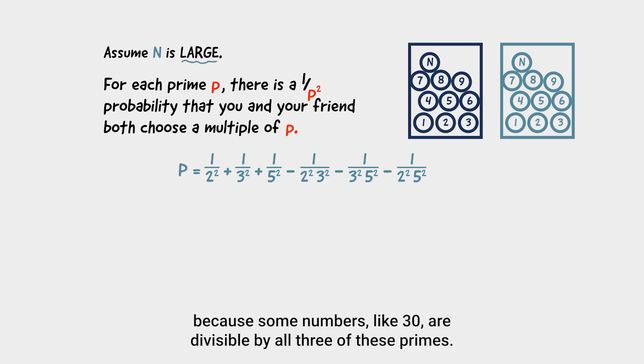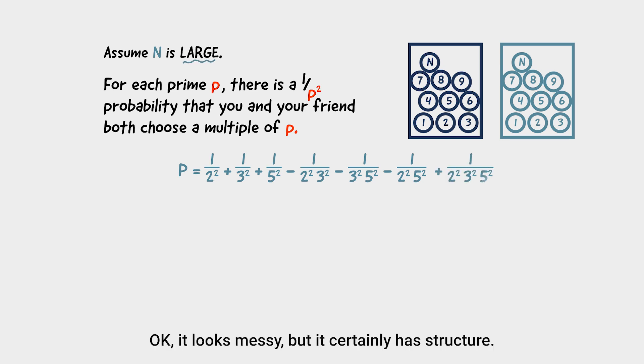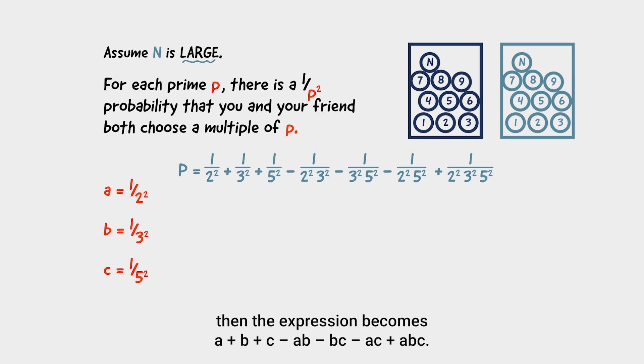because some numbers, like 30, are divisible by all 3 of these primes. And this means, for example, that we have accounted for 30 three times, and then unaccounted for it three times. So I will need to balance this too. Okay, it looks messy, but it certainly has structure. If we write a for 1 on 2 squared, b for 1 on 3 squared, and c for 1 on 5 squared, then the expression becomes a plus b plus c minus ab minus bc minus ac plus abc. Can you factorise this?